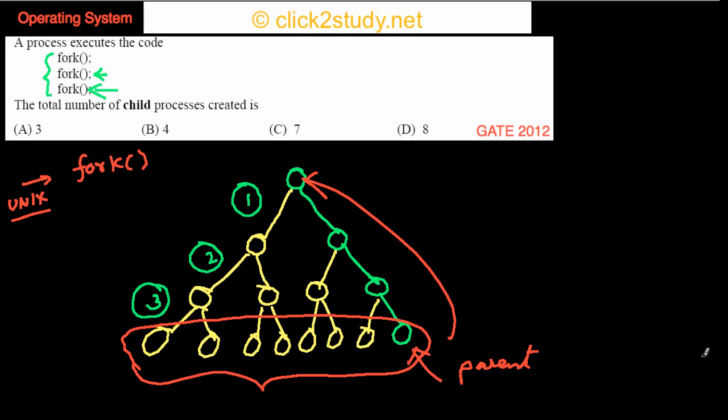And what you can also do is from here you can get a general formula. If you execute this fork n times—suppose this fork is executed n times—how many processes will there be in total? There will be in total 2 raised to n processes.